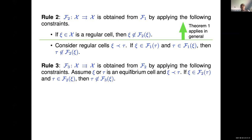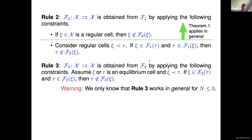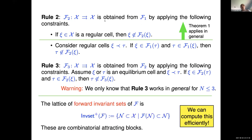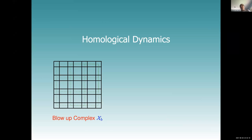After you've done a subset of these restrictions, then we can talk about the lattice of forward invariants. Given the script F, we can very efficiently compute this set — these are the combinatorial attracting blocks from which I can compute Conley indices. Then we move to the homological dynamics. We need to have a blowup complex to reach a conclusion.